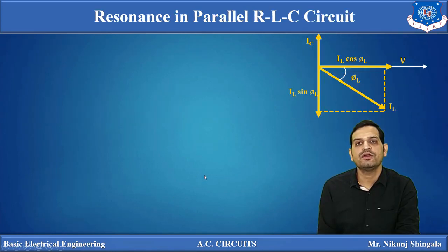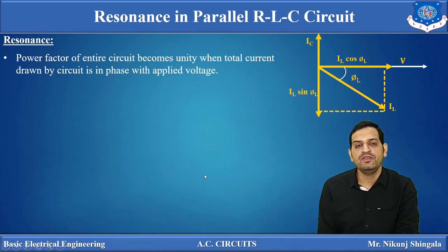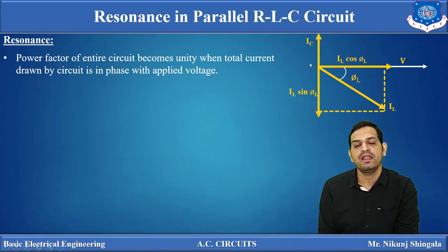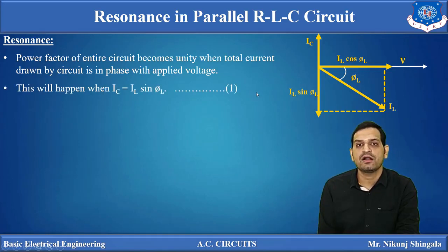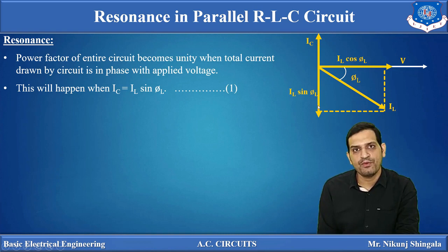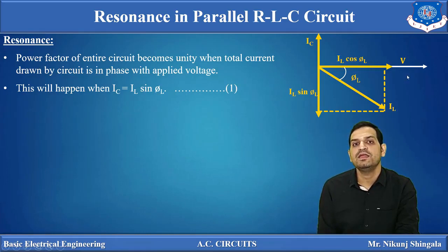Using this phasor diagram, let us determine the condition of resonance. Resonance occurs in the circuit when the power factor of the entire circuit becomes unity — when the total current drawn by the circuit is in phase with the applied voltage. The total current is the phasor sum of IL and IC. There are two components of IL: IL cos φL and IL sin φL. Total current becomes IL cos φL when IC and IL sin φL cancel out each other. In that condition, total current is IL cos φL, which is in phase with V.